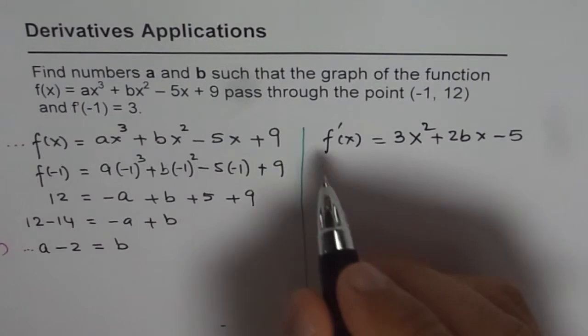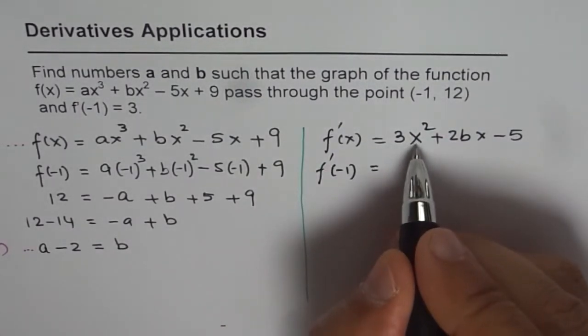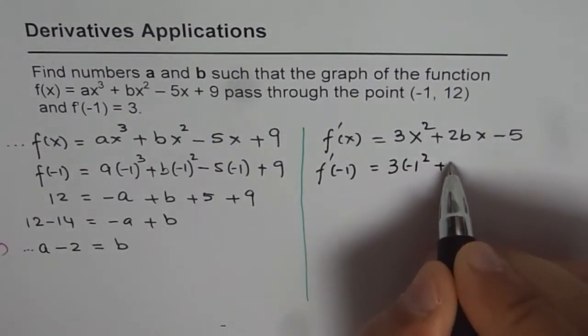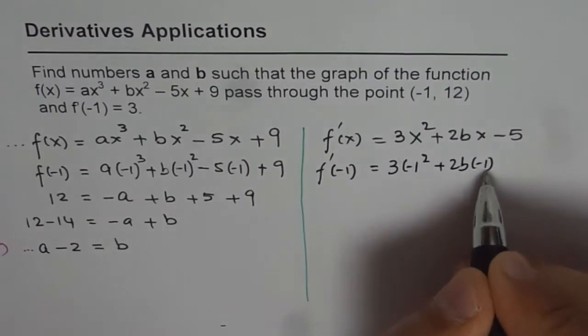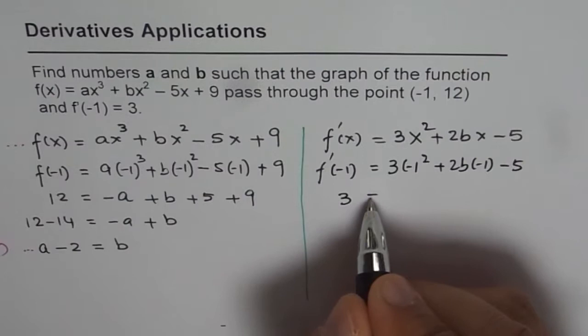So f'(-1) equals, just substitute minus 1 for x, (-1)² + 2b(-1) minus 5, is given to us that this derivative is 3 at minus 1.